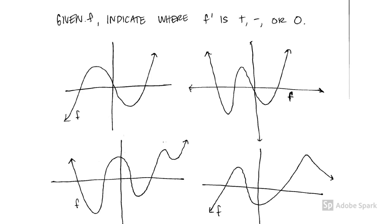Here's the first part of your assignment. For each function — the original function is graphed — indicate where the derivative is positive, negative, and zero. You can use symbols or colors, whatever you like.